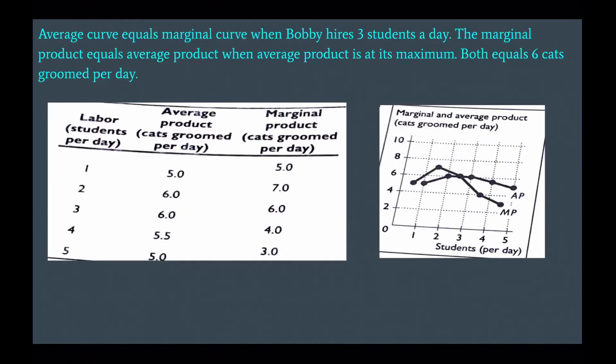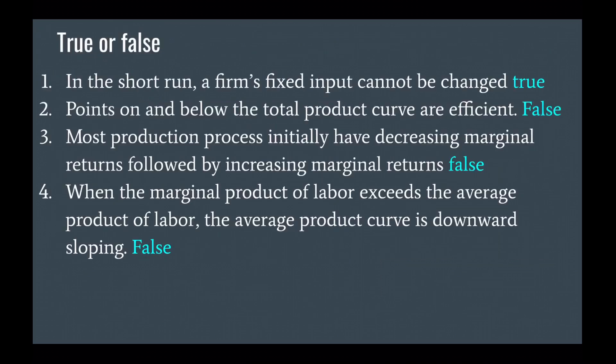This is the calculated average product and marginal product, and this is the graphical representation of the marginal and average product curves. The average product curve equals the marginal product curve when Bobby has three students a day. Marginal product equals average product when average product is at its maximum — both equal six cats groomed per day. True or false — you can see for yourself.